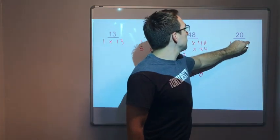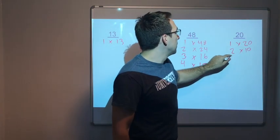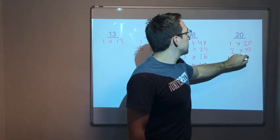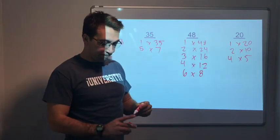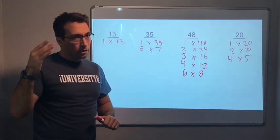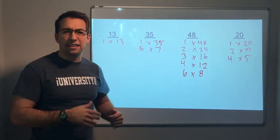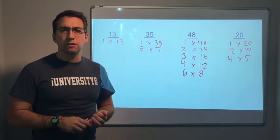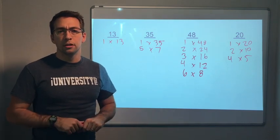20. 1 times 20, 2 times 10, 4 times 5. These are factors. This is help practice, just learning how to find the factors that you have for a product or for a number.